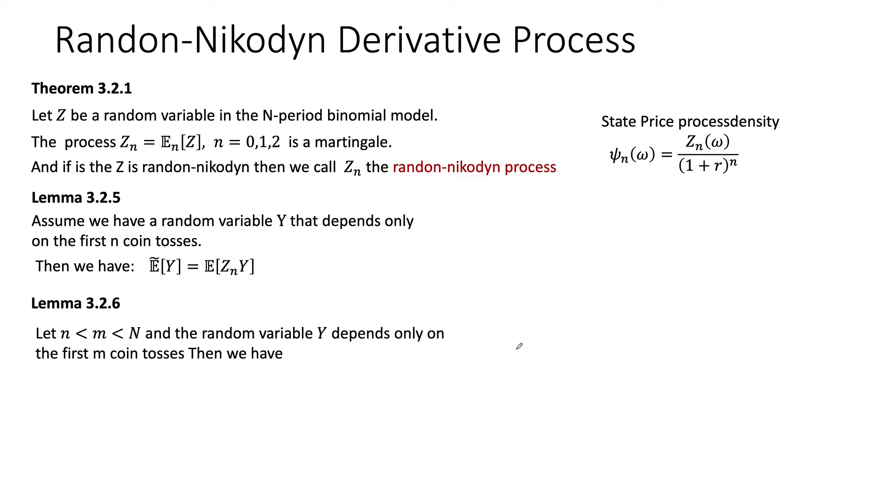And also, there's this other lemma. I'm not going to prove this one. But basically, the expected value as we stand at time n of random variable Y using the risk-neutral world, that is just this ratio of the Randon-Nikodym derivative as of time n, where it will be known, of the expected value of Z_m times Y. Alright.